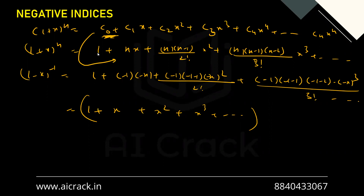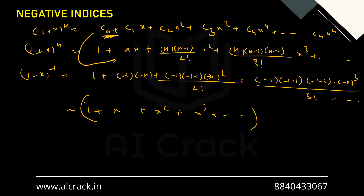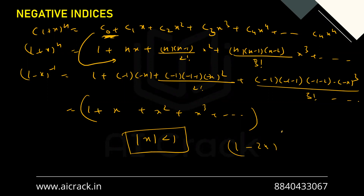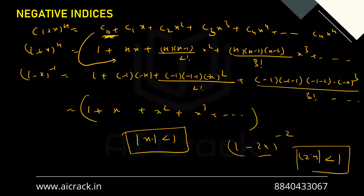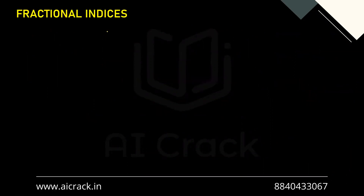There is one important condition: since we originally derived the GP only for |x| < 1, when using negative or fractional indices we must always have |x| ≤ 1. And note that 'x' here means the entire expression inside — for example, in (1−2x)^(−2), we need |2x| < 1, not just |x| < 1. This condition must be followed for any such binomial expansion.